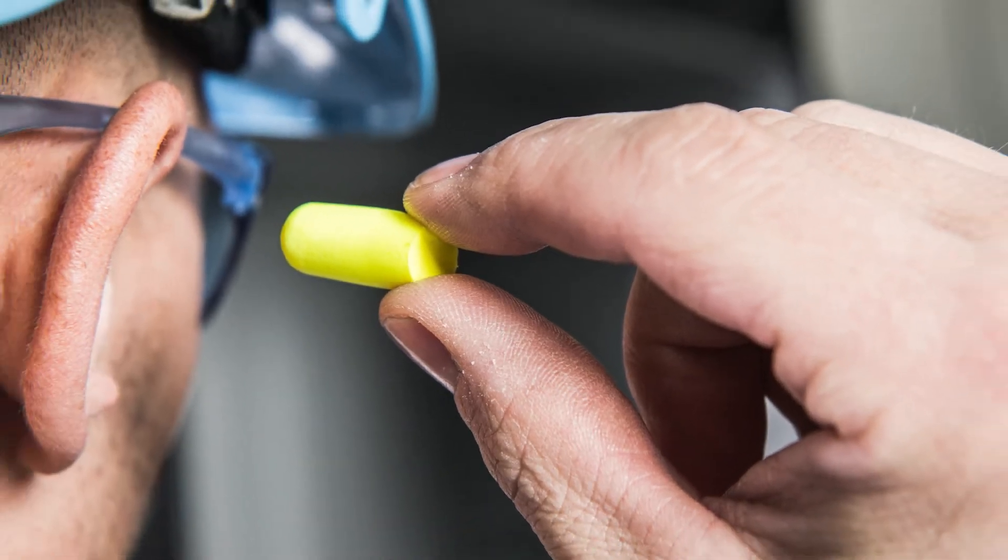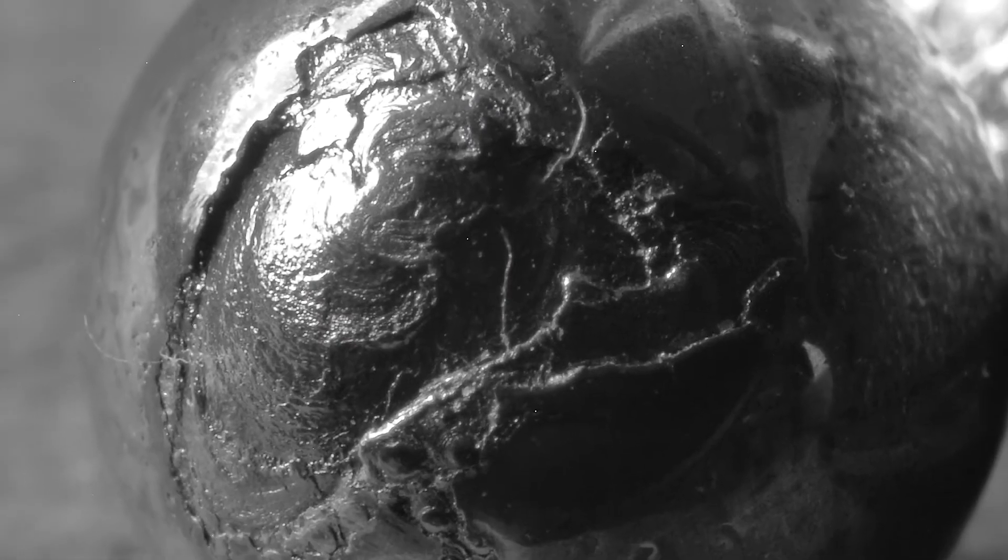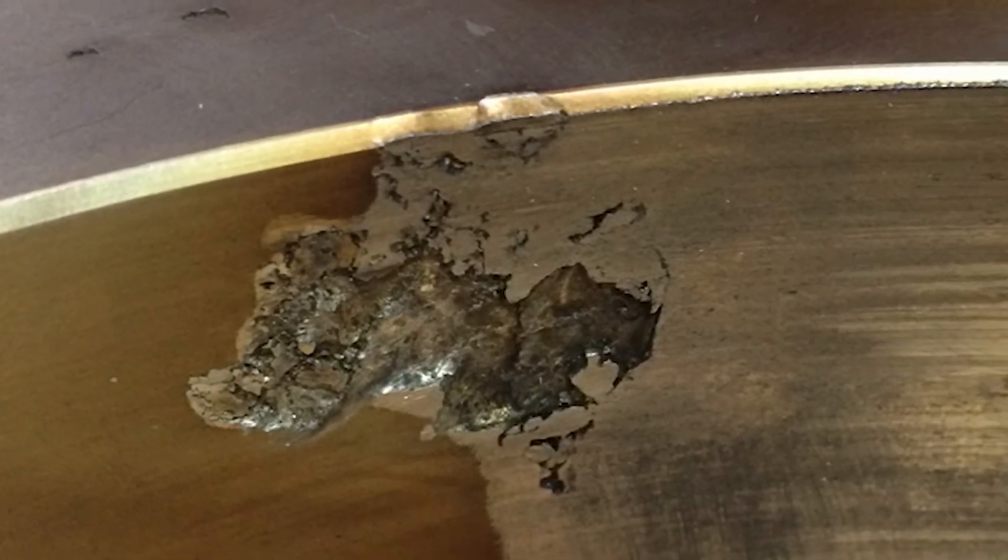The first sign of bearing damage is audible noise due to the bearing balls traveling over the pitted and frosted areas. How are these pitted and frosted areas created?